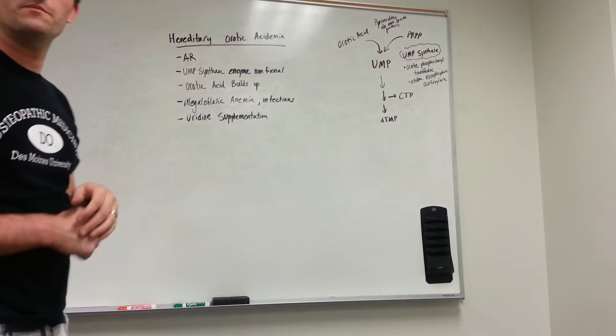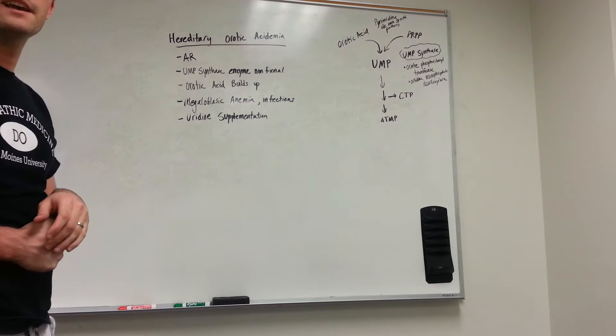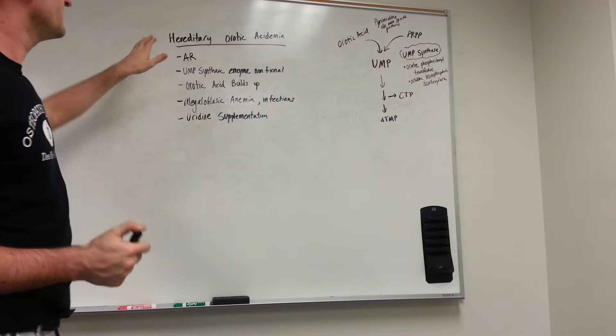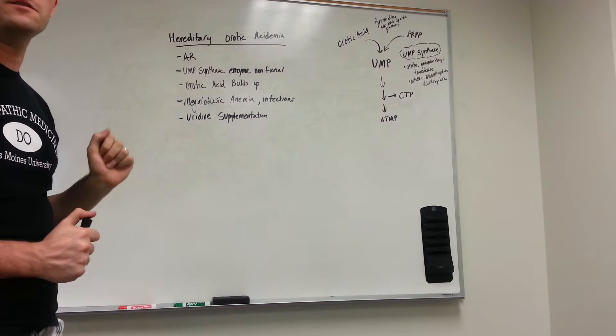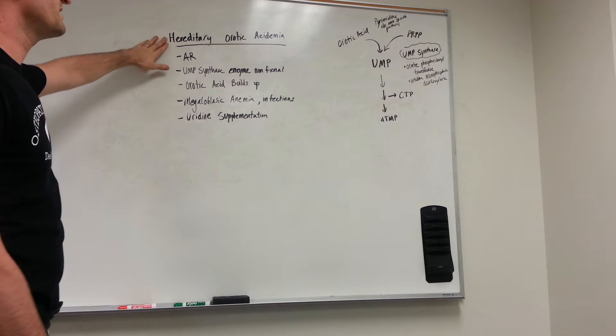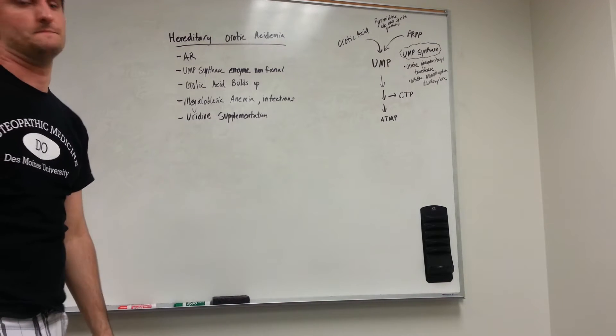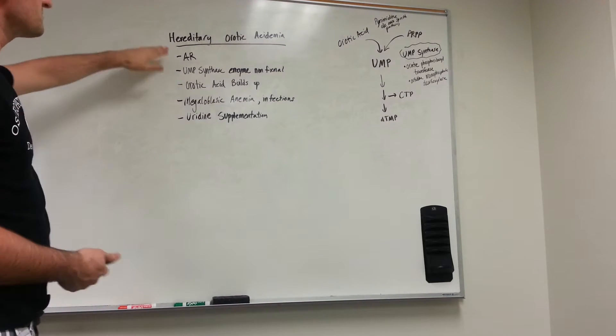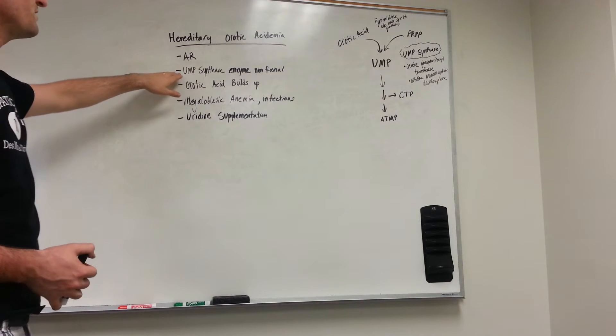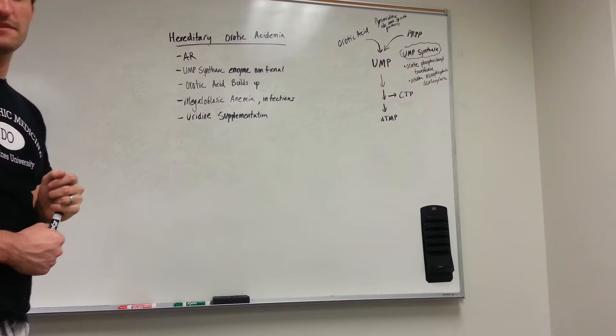We just talked about purine de novo synthesis and pyrimidine de novo synthesis. Now let's talk about a clinical correlate to our pathway that we just covered: hereditary orotic acidemia. It's an autosomal recessive disorder where you have a UMP synthase enzyme that does not work.